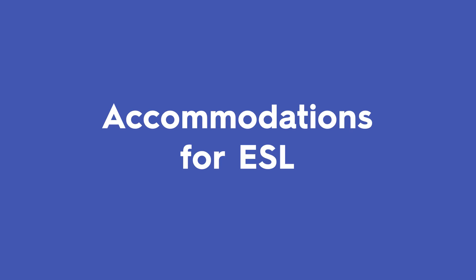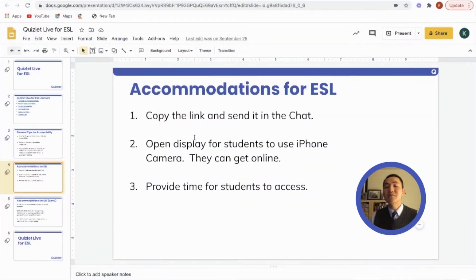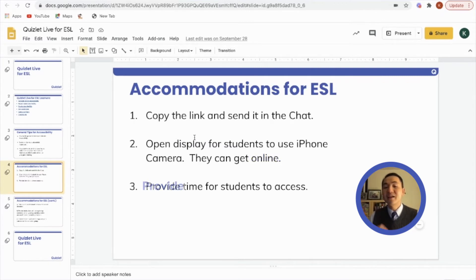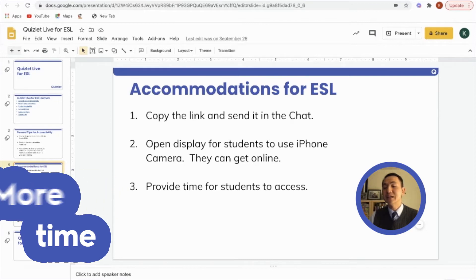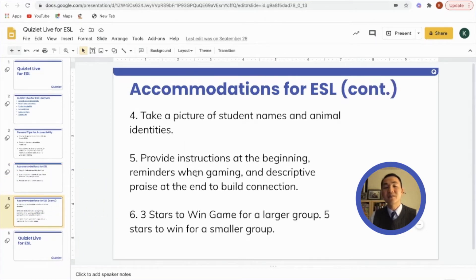For some accommodations for ESL, one item is to copy the link and send it in the chat. Secondly, open the display for students to use the iPhone camera, and then they can get online. Provide time for students to access Quizlet Live — I would definitely give students more time at the very beginning when they first learn Quizlet Live. You want to take a picture of the students' names and these animal identities that they have.